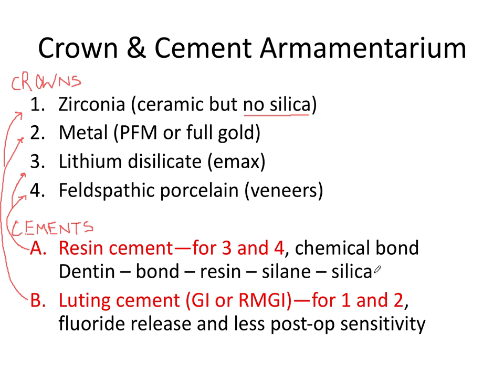On the crown side, you have the silica-containing crown. You etch the glass-infiltrated ceramic with hydrofluoric acid—not phosphoric acid—then treat the inside of the crown with silane coupling agent. Then we fill with a resin cement and seat the crown on the tooth.